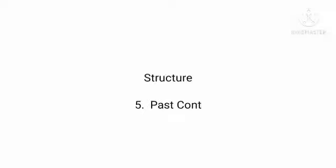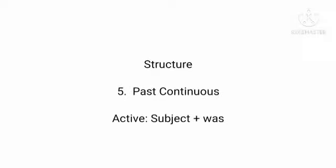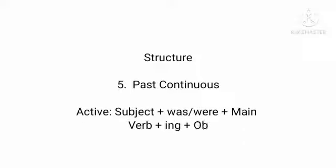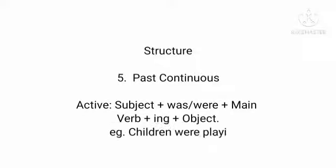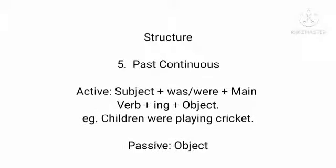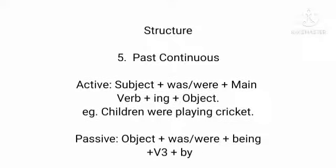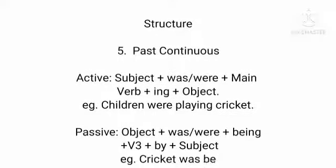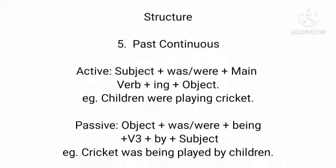The same way as in present continuous tense we had used am, is, are or be form of verb, in the same way the structure of past continuous tense in active voice is subject plus was or were, because it is past tense, plus main verb plus ing plus object. And the example is children were playing cricket, which changes into passive voice as cricket was being played by children. So the structure is object plus was or were plus being plus third form of verb or past participle, followed by preposition by plus subject.